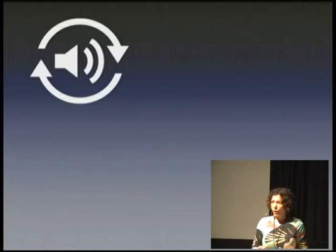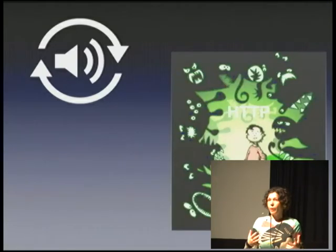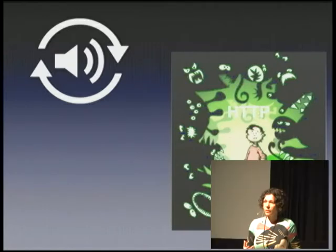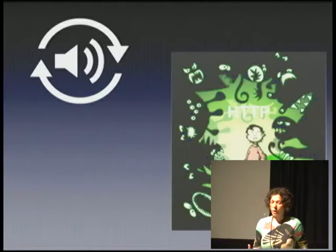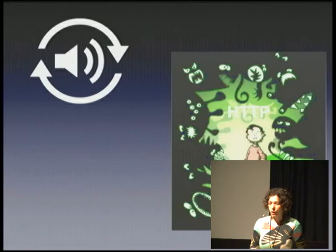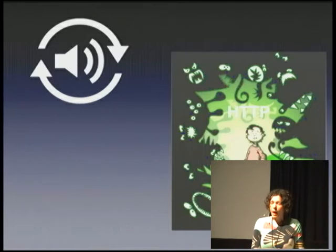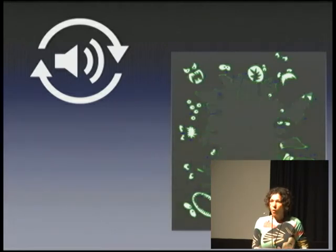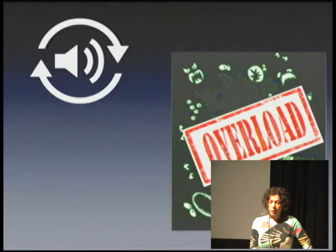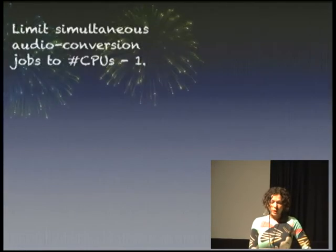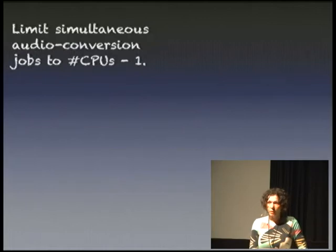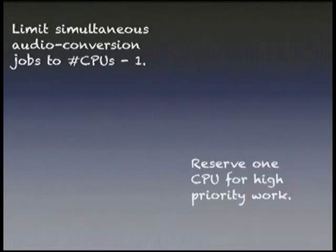Now let's look at our audio conversions. Those are CPU intensive and we have to be careful. Our HTTP server will be getting multiple audio requests and we are bound to be in a situation where multiple audio conversions will be running simultaneously. So how do we make sure that, on a machine with eight CPUs, all eight CPUs are not eaten up by those audio conversions while we still have a little bit of resources left for important HTTP requests? How do we not end up in a situation commonly known as overload?